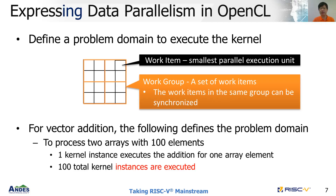In OpenCL, the work-item can be viewed as a thread, or the abstraction of the smallest parallel executing unit. A set of work-items can be grouped into a work-group. Each work-item in the same work-group can be synchronized by barrier or built-in functions. For vector addition, the problem domain is defined as follows: we must process two arrays with 100 elements, and one kernel instance executes the addition for one array element, so 100 kernel instances are totally executed.